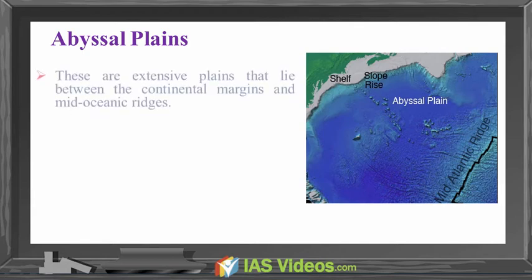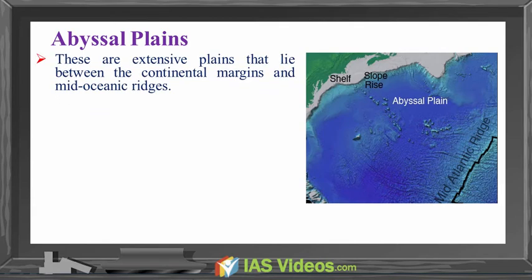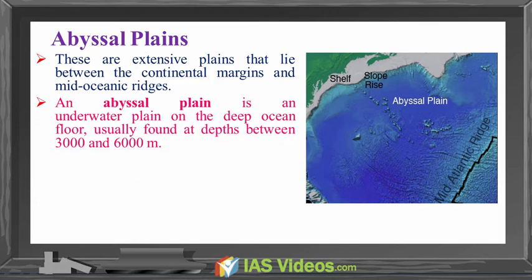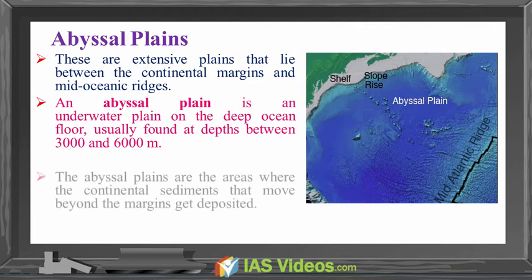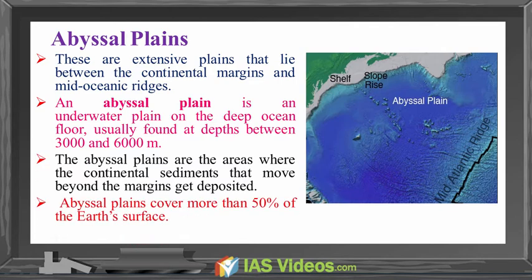Abyssal Plains. These are extensive plains that lie between the continental margins and the mid-oceanic ridges. An abyssal plain is an underwater plain on the deep ocean floor, usually found at depths between 3,000 to 6,000 meters. They are the areas where continental sediments that move beyond the margins get deposited. Abyssal plains cover more than 50% of the Earth's surface.